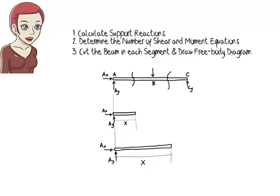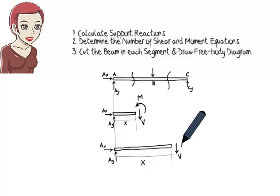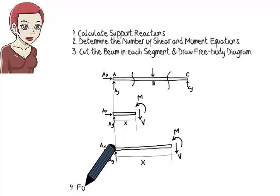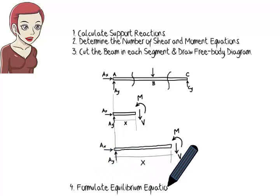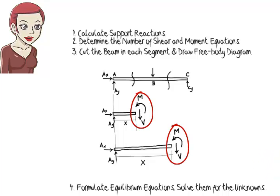Note that the distance from the left end of the beam to the cut point is labelled x in both cases. Then we draw the free body diagram for each segment. The fourth step is to formulate the equilibrium equations for each segment and solve them for the unknowns. Here, the unknowns are the shear and moment at the cut point.